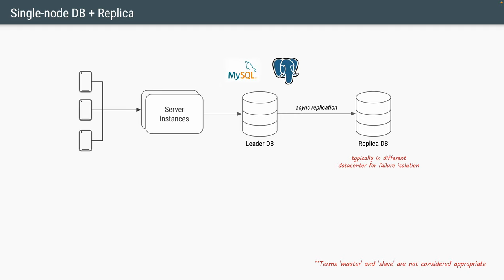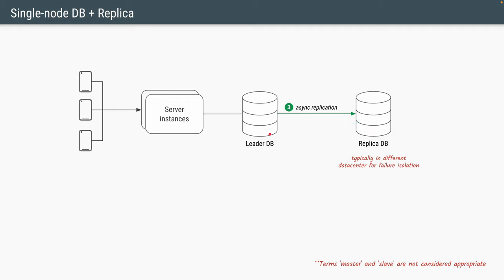Typically, a database in production will also have a copy of it — a running replica — so that if the primary goes down, you still have a copy of the data. The replication between these two databases will use asynchronous replication, which means whenever there are writes from your application to the database, the database first stores it to its own disk, returns an OK response, and then behind the scenes the data is replicated from the leader database to the replica database. Terms master and slave were used to define this setup, but they're no longer considered appropriate, so we'll use the terms leader and replica.